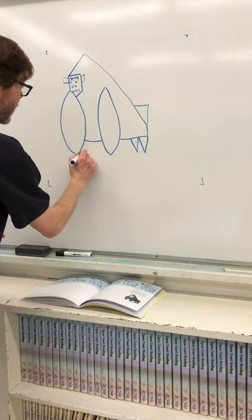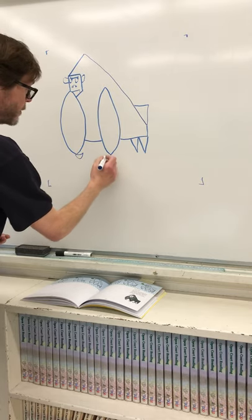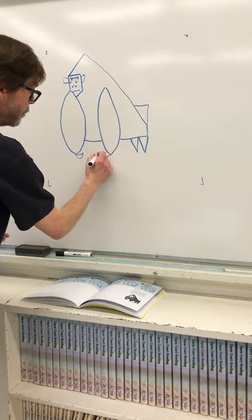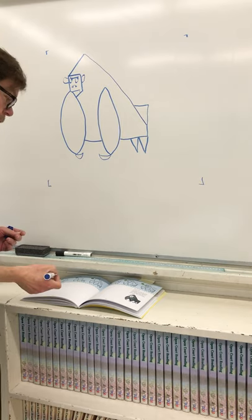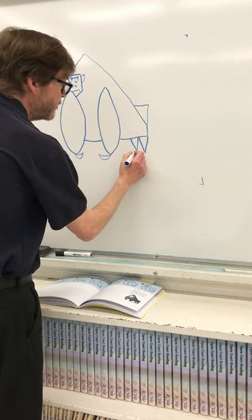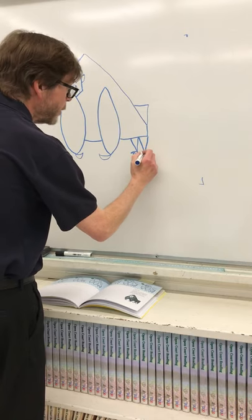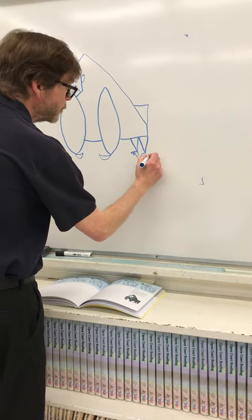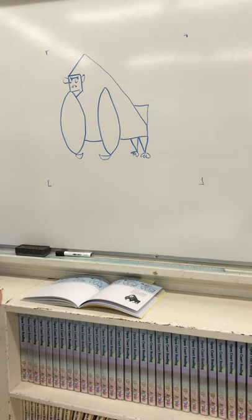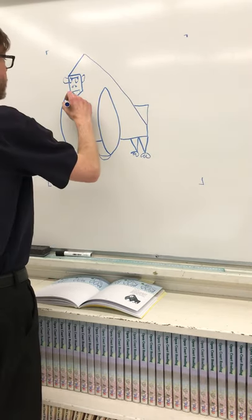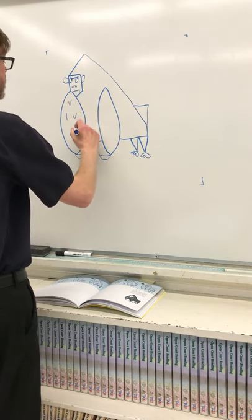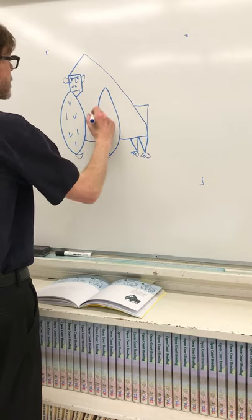All right, a couple things to do to finish her off. We're gonna have a couple of hands here for our gorilla and they're gonna go opposite ways - one going that way, one going that way. And then we're gonna have some back feet: one, two, three and one, two, three, like so.